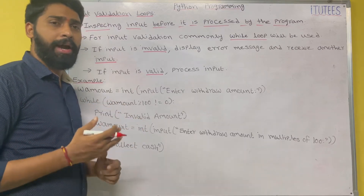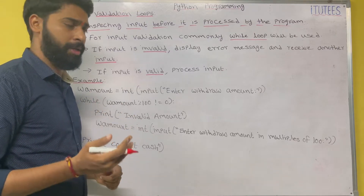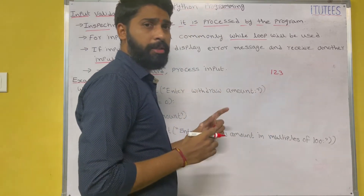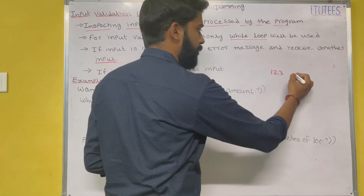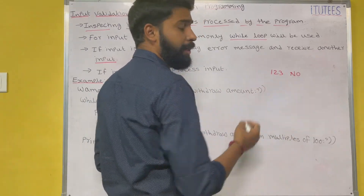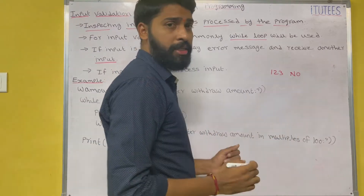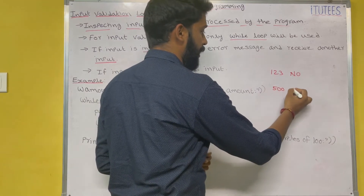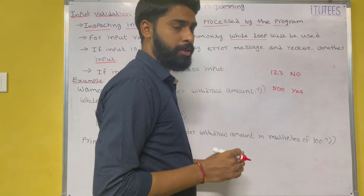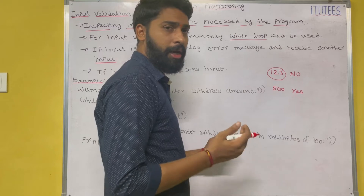Let us discuss with a real-time example. When you enter into an ATM to withdraw money — for example, if I enter 1 2 3, the money is not withdrawn. It displays a message: please enter an amount in multiples of 100. So if I enter 500, then the money will be withdrawn from your account. Here we are going to validate this input.